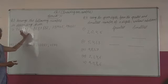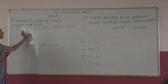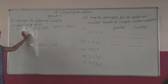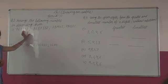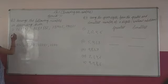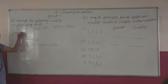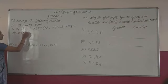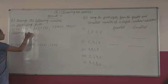So first of all, before arranging the numbers in descending order, we will check the number of digits — how many digits each number has — and which number we have to write first. In descending order, which number do we write first? The greatest number, the largest number. So, descending order.